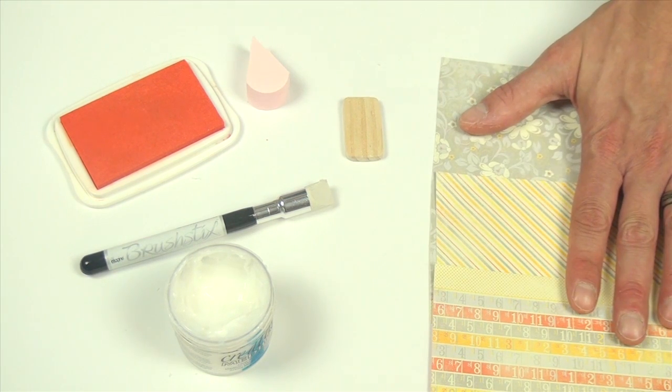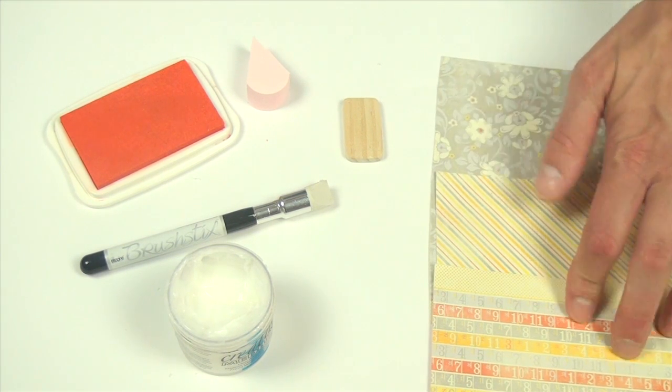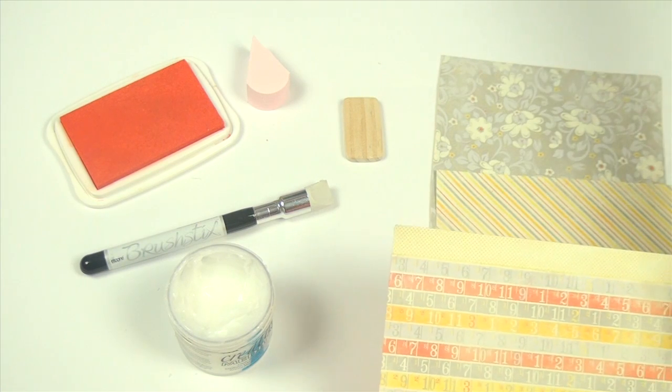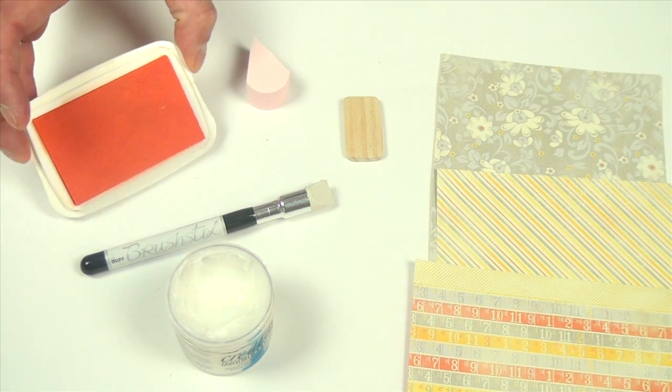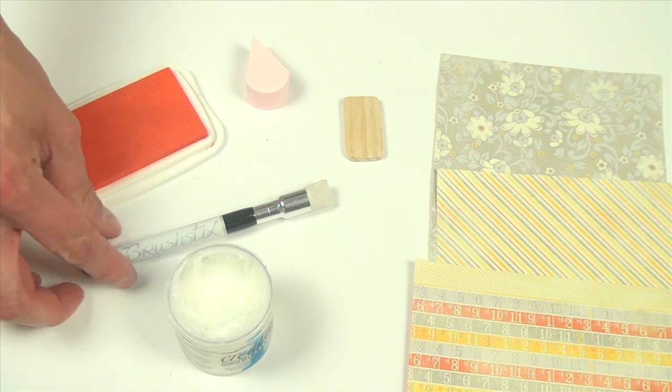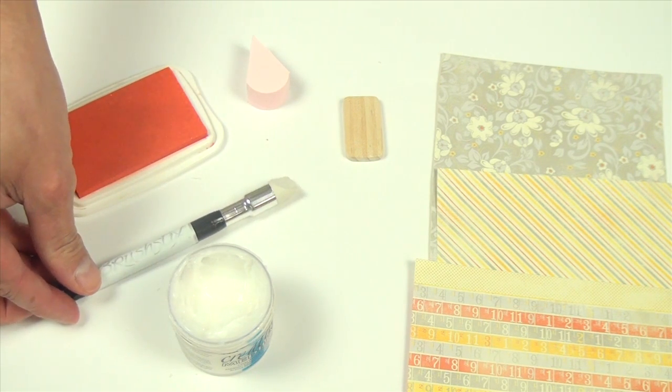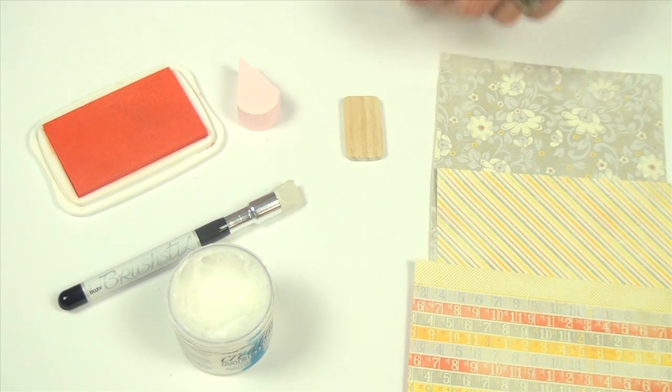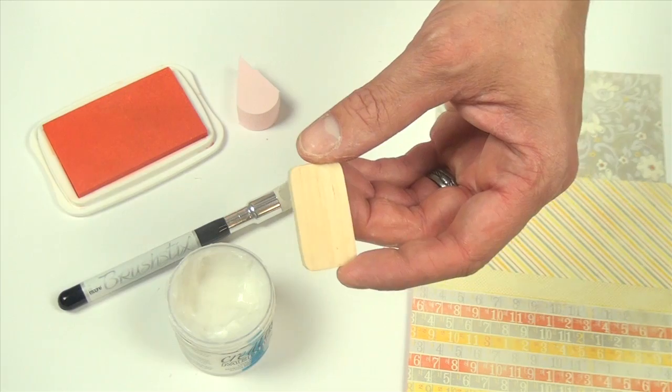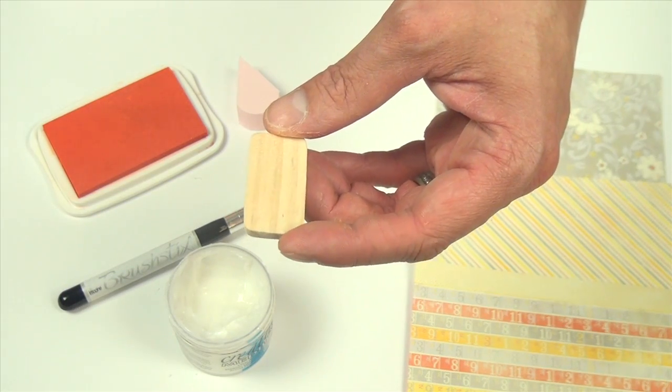We also have some great papers from our friends at Authentique Paper, and this is from the Beautiful collection. We're going to be using Memento Luxe in the Morocco color, a brush stick for applying our creative medium, and an ink blusher for adding a little bit of ink. And of course, we can't forget our fine wood embellishment.